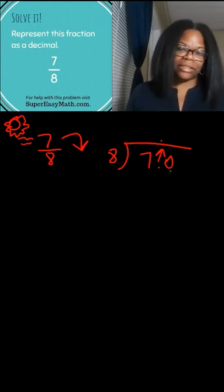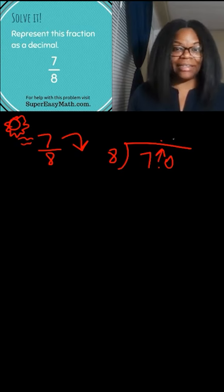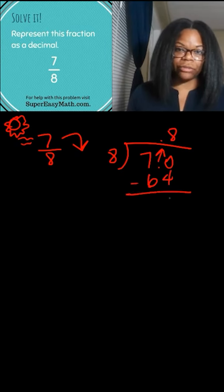Now you ask, how many times does eight go into 70? Well, eight times eight is 64, so that's the closest you're going to get. When you subtract, you get six, and then you need to add a zero and bring it down.